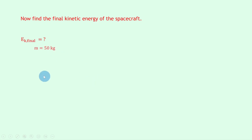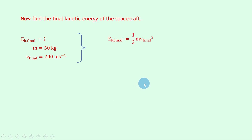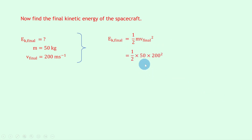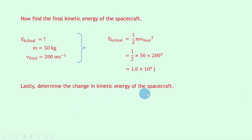Now we want to find the final kinetic energy of the spacecraft. The mass is 50 kilograms again and the final velocity is 200 meters per second. Writing down our equation: EK_final = ½mv_final². Substituting in the numbers: ½ × 50 × 200² gives an answer of 1.0×10⁶ joules.